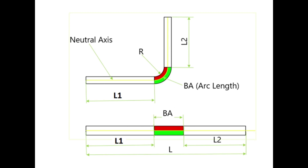When we flatten our part, we have L1, L2, and here we have the bent allowance. For example, if we select the bent allowance as the arc length of the inner radius, we will get a different result than if we select the outer radius. The total flat length will be different.